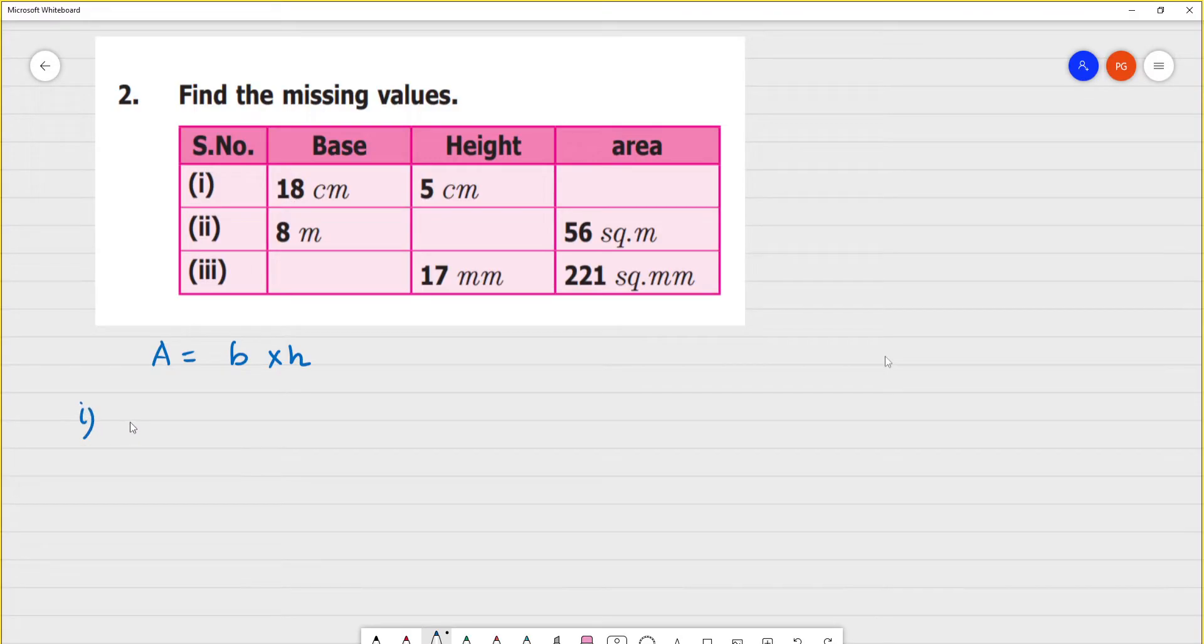So, first one. Base is 18, 18 multiplied by 5, that is equal to 90 square centimeters. So, what is the answer here? 90 square centimeters.